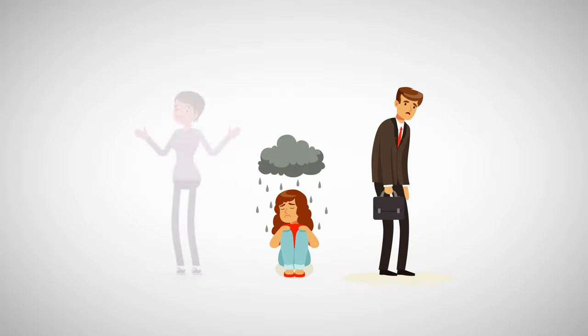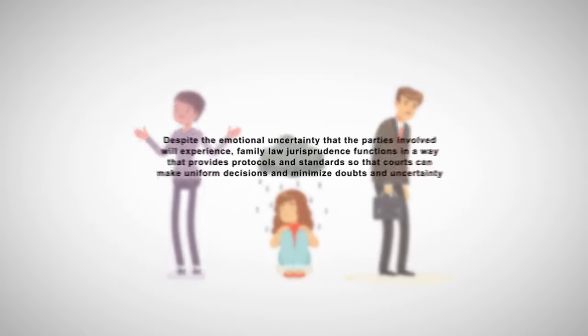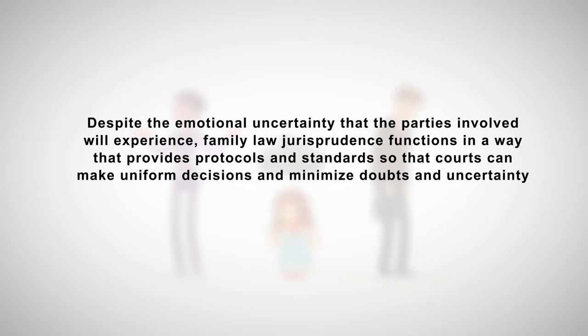Determining child custody is an emotional process for both parents and children. Despite the emotional uncertainty that the parties involved will experience, family law jurisprudence functions in a way that provides protocols and standards so that courts can make uniform decisions and minimize doubts and uncertainty.